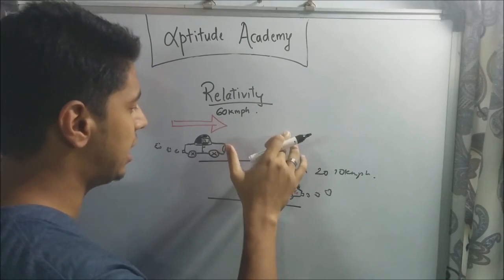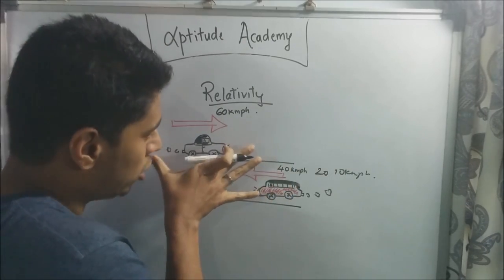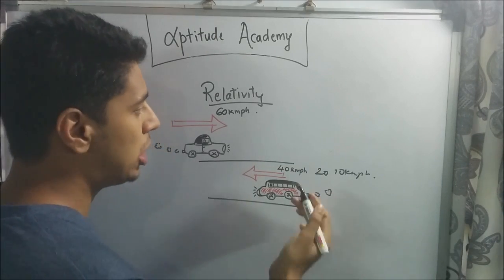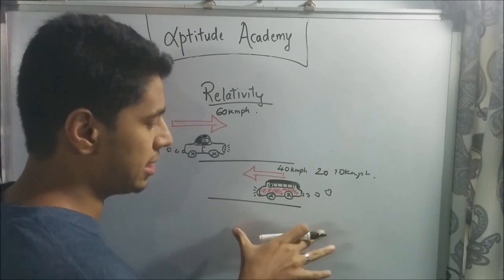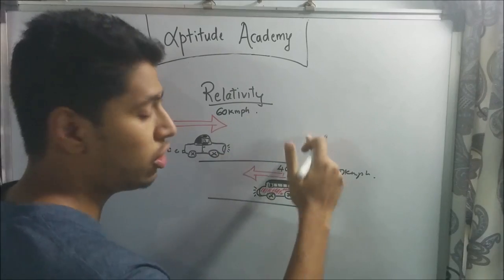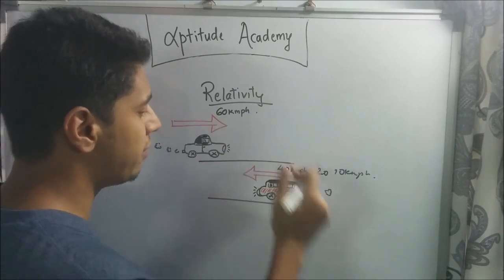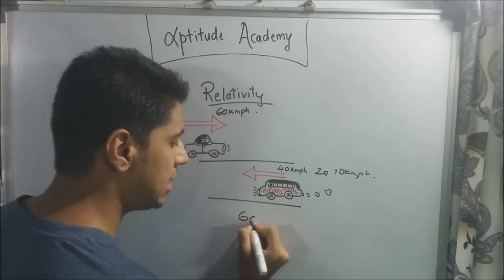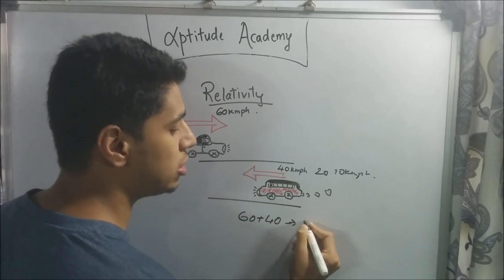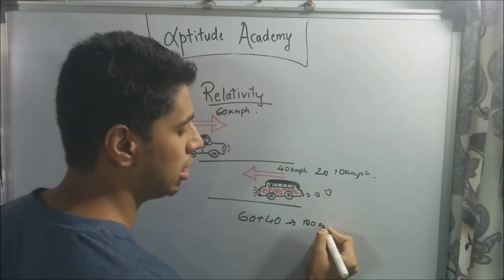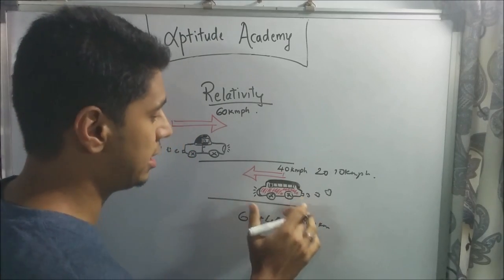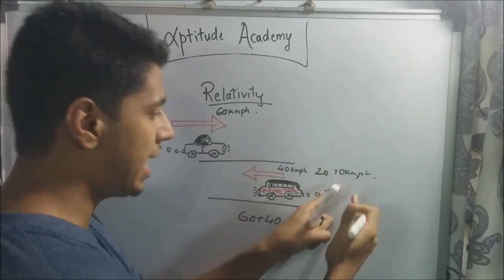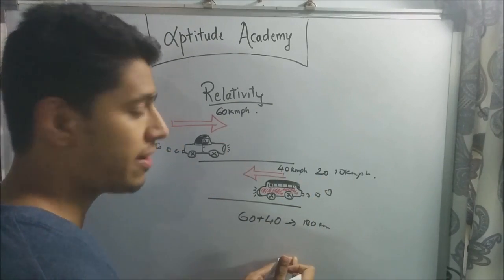When you're moving and some object is moving in the opposite direction, you will not see its actual speed. You will see it as the addition of both your speeds. So if the bus was coming at 40 km/h and you're at 60 km/h, you would see it zoom by at 100 km/h. If it was at 20, you'd see 80; if at 10, you'd see 70.